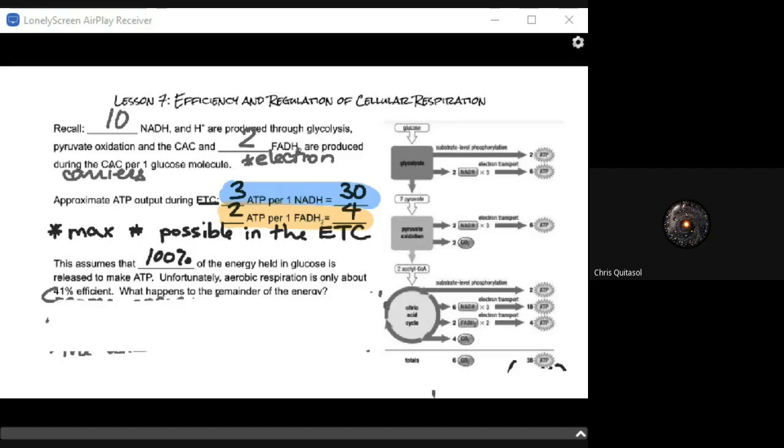This is the maximum number possible that can be produced in the electron transport chain. This calculation assumes that it's going to be 100% effective, but it's really only about 41% effective, not even 50%.